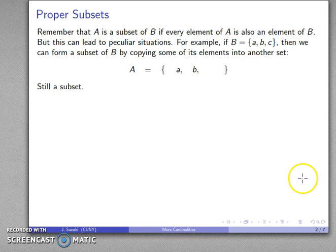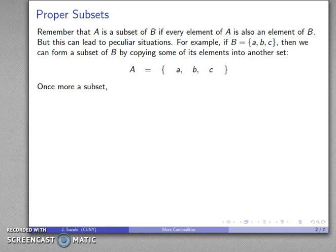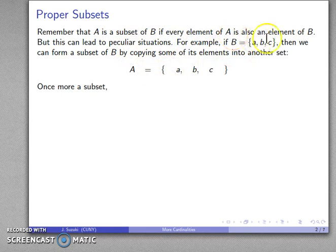If I throw in something else, then again everything in A is in set B, so A is still a subset. And if I throw in something else again, everything in A is in B, so A is a subset of B — even though they are the same set.